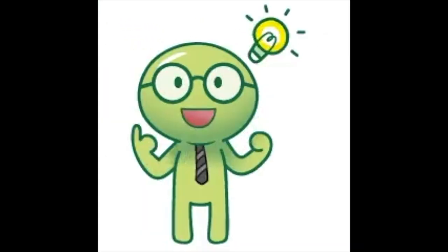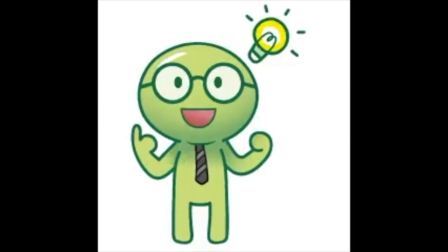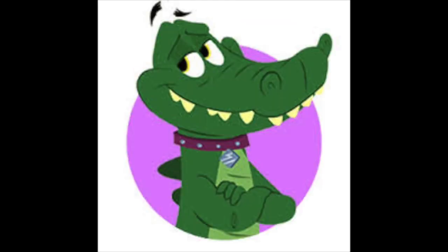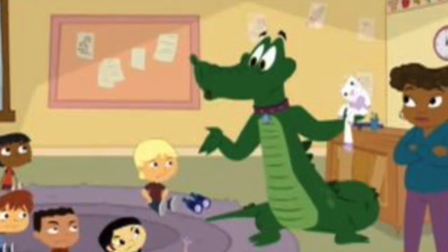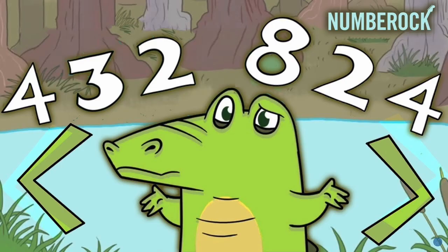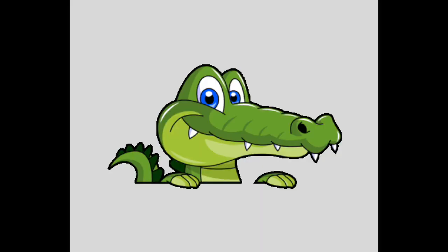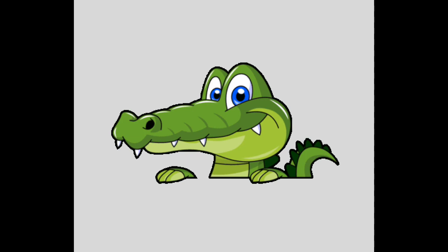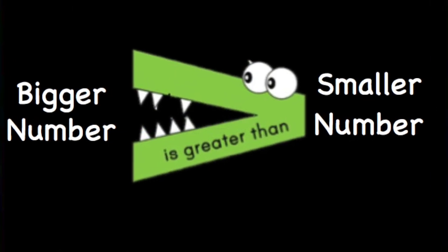An alligator helps us know which way our sign should go. The alligator likes to show which number has to go. And so the gator has to face the greater number.